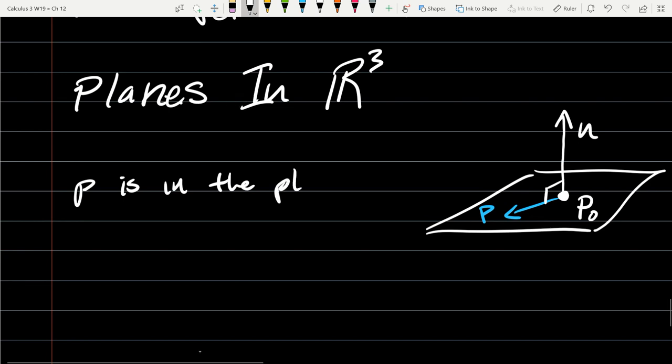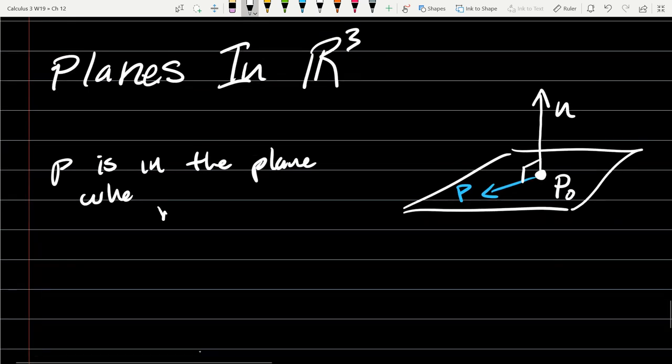This is in the plane when we take a dot product and we get zero. So when P0P dot N equals zero.